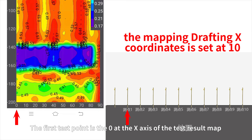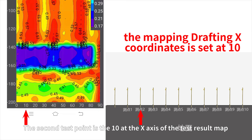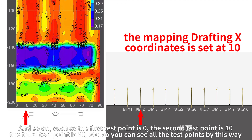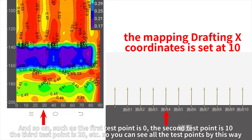The first test point is 0 at the x-axis of the test result map. The second test point is 10, and so on — such as the first test point is 0, the second test point is 10, the third test point is 20, etc. So you can see all the test points this way.